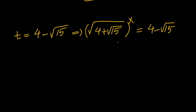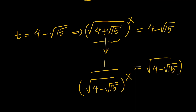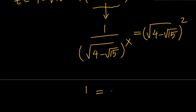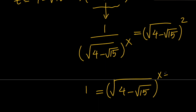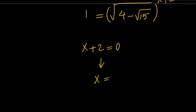Now let's say t equals 4 minus root 15. We can replace (square root of 4 plus root 15) to the x with 1 over (square root of 4 minus root 15) to the x, and the right-hand side becomes (square root of 4 minus root 15) squared. Cross-multiplying gives 1 equals (square root of 4 minus root 15) to the power of x plus 2. Since the result is 1 and the base is not 1, the exponent must be 0, so x plus 2 equals 0, meaning x equals negative 2.